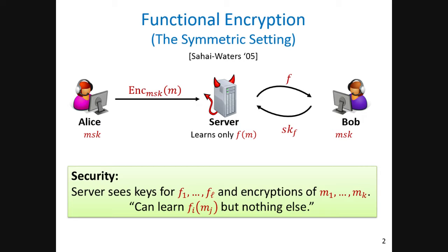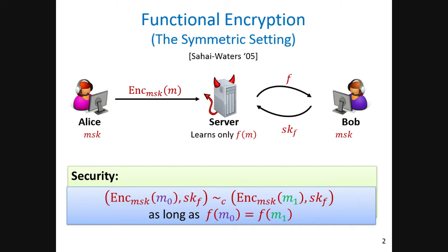How we formalize this notion of 'nothing else' is a central topic of research, and there are a couple of variants. I'll be mostly talking about the indistinguishability-based one, in which we require that the server seeing two encryptions of messages M0 and M1 will not be able to distinguish them — as in standard encryption schemes — but here it also has access to a key for some function F, and we require that the ciphertexts are indistinguishable even given the key, as long as the function F does not separate the two messages by itself.